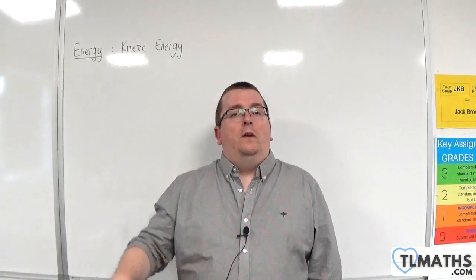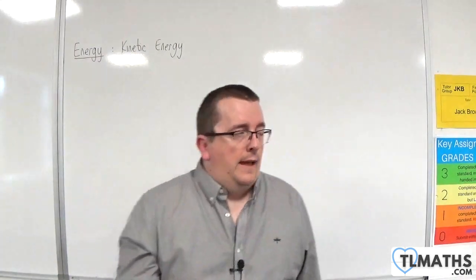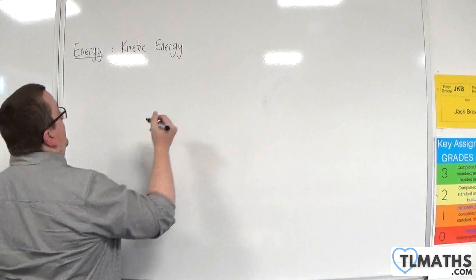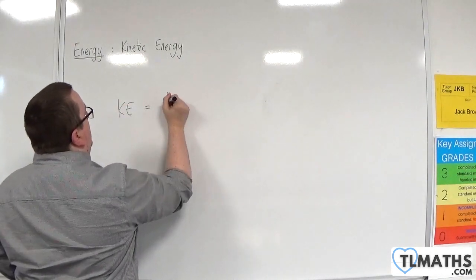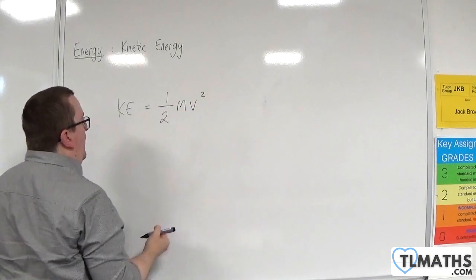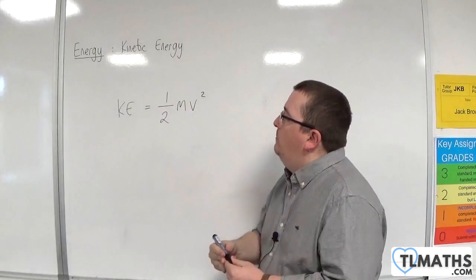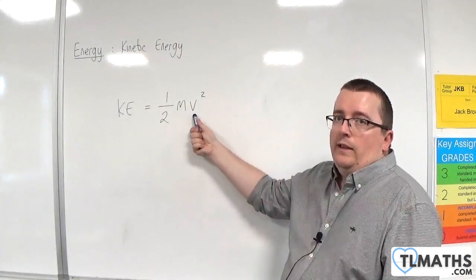Kinetic energy is the energy of an object due to its motion. And you can calculate kinetic energy, KE, by this formula, which is one-half mv squared, where m is the mass of the object and v is its velocity.